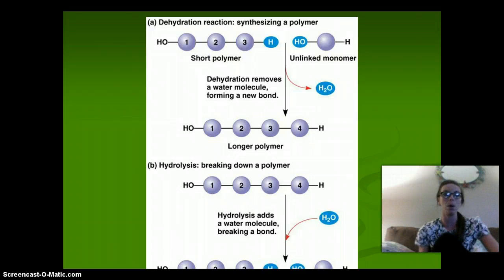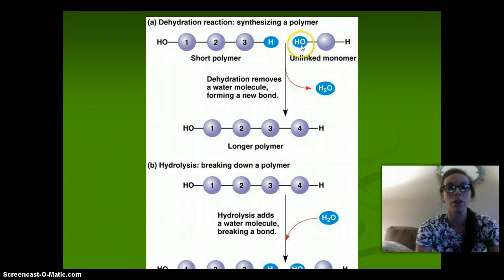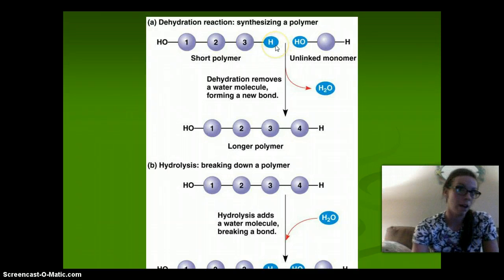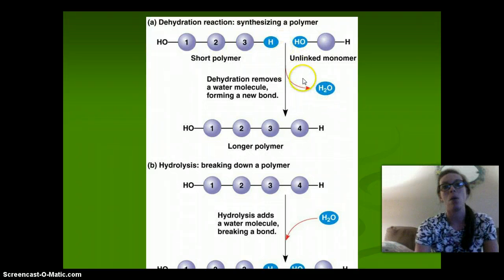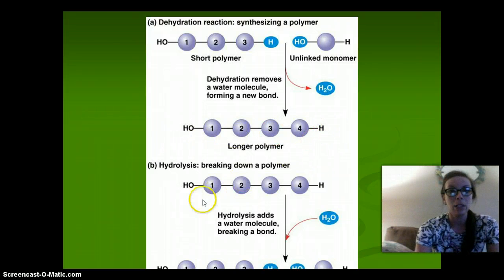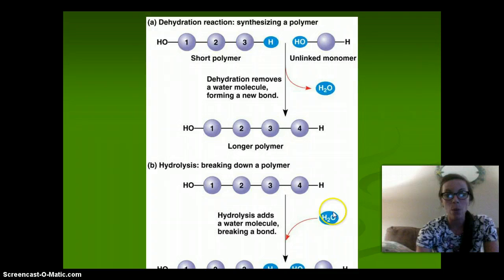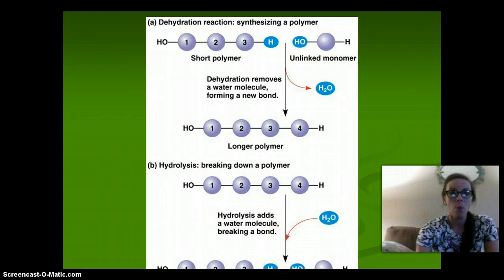Here's another example. We have a short polymer and another monomer. They come together so that the OH on this monomer links up with the H on this polymer. If we have two H's and an O, that makes water. The water is removed and these are bound together to make one long polymer — that is dehydration synthesis. Breaking down the polymer through hydrolysis adds a water molecule in between our molecules, giving the H to one and the OH to the other.